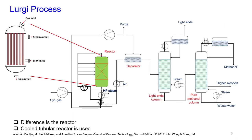Revisiting the previous lecture: in the ICI process there is a reactor system, a light ends separation, a pure methanol column, and a gas-liquid separation. The heart of the process is the reactor. Compressed syngas is sent in, heat is exchanged with the effluent coming from the reactor, and a part is sent as quench to control the heat of reaction within the reactor. The remaining approximately 40% of syngas is sent as feed to the reactor, and the effluent is cooled through an air-cooled heat exchanger before entering the gas-liquid separator.